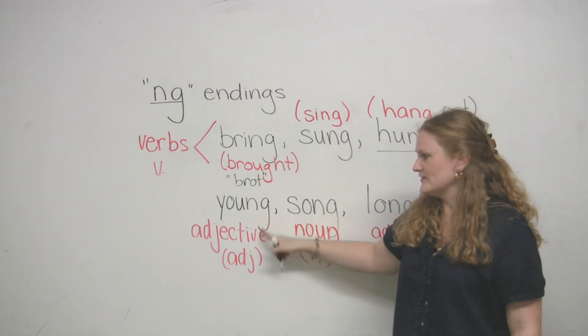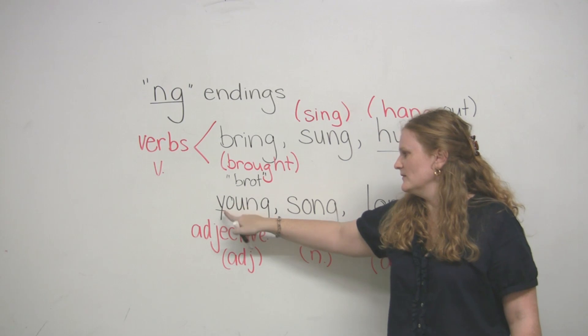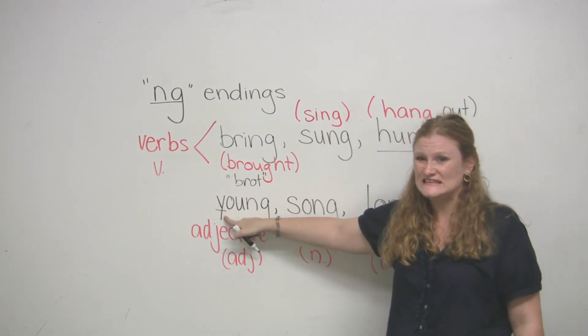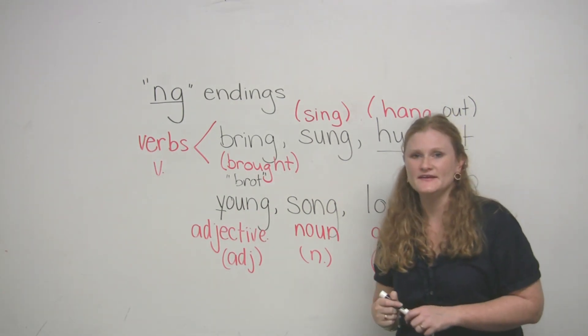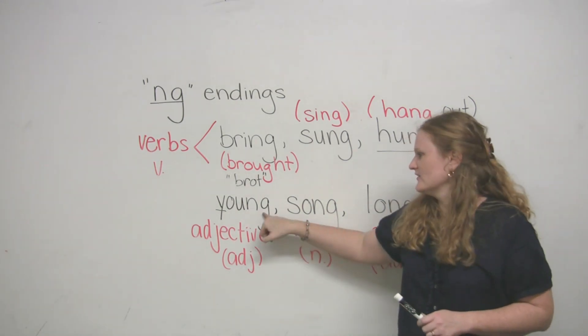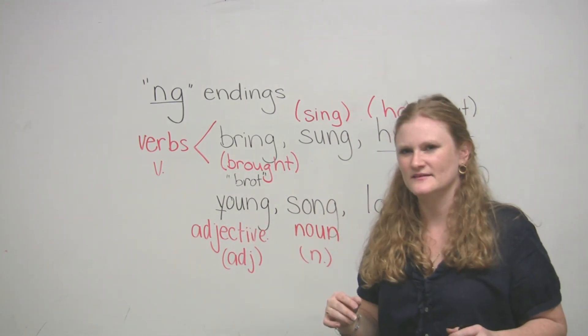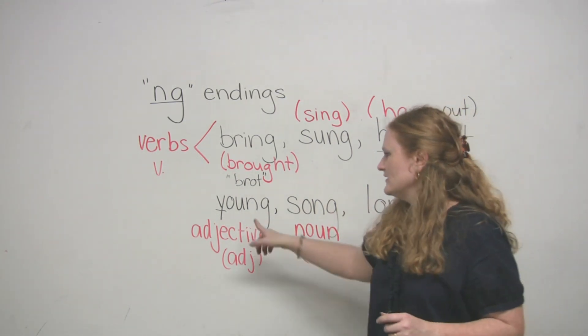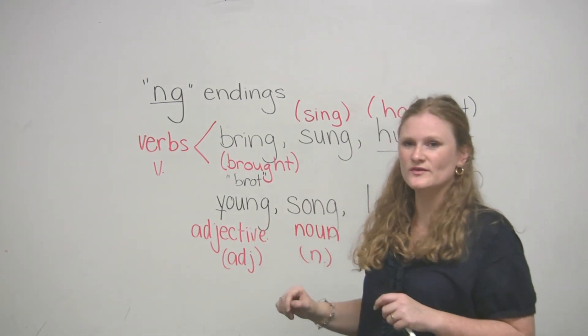The next one we have is an adjective. And for you Spanish speakers, English speakers, remember, this is not a G. This is a Y. So this adjective is young. There is no G sound. It's a straight young. Try it. Young. Do you know the opposite of young? Perhaps. It's old.